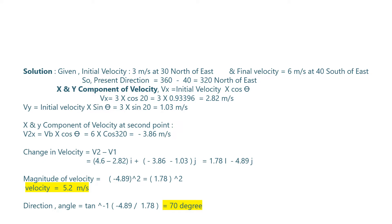So the magnitude of the change in velocity is the square root of 1.78 squared plus minus 4.89 squared, which equals 5.2 meters per second. Finding the direction: theta equals arctan of minus 4.89 divided by 1.78, which comes out to be 70 degrees.